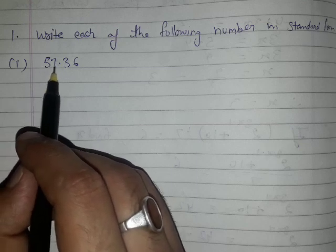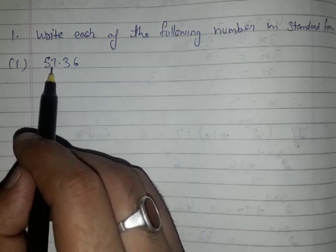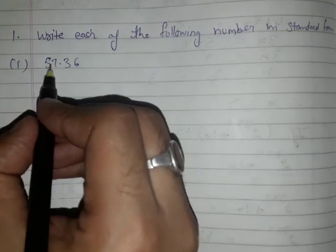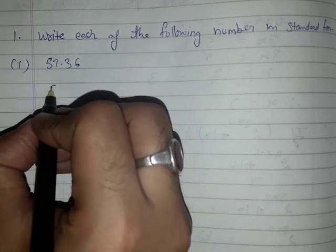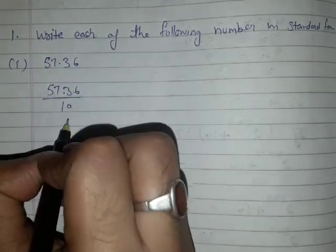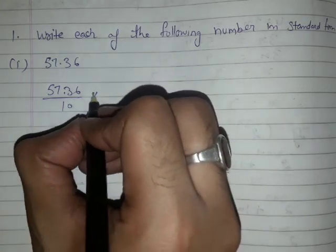So to satisfy the condition of M, the number will become 5.736. To convert this to 5.736, you will divide 57.36 by 10. So if you have divided this number by 10, then you have to multiply this number by 10.